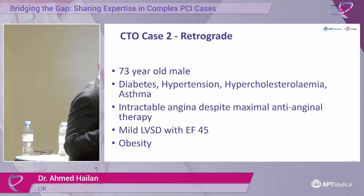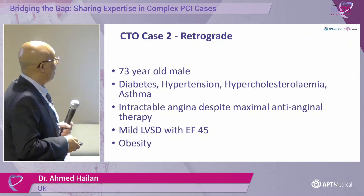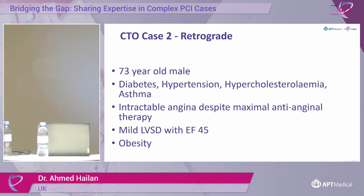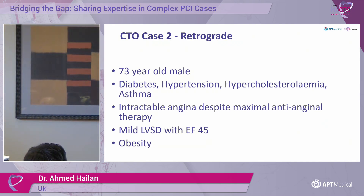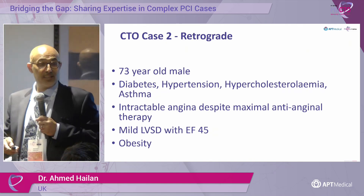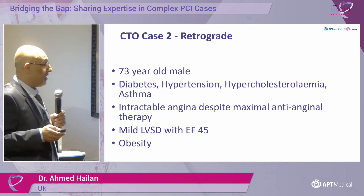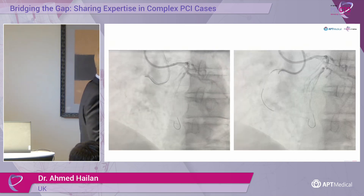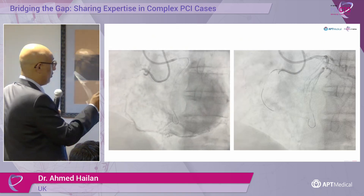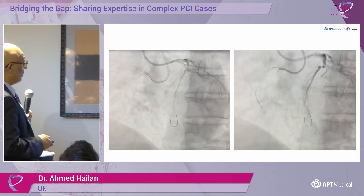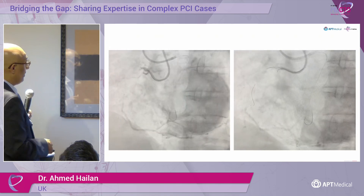The next case is a 73-year-old gentleman, diabetic, hypertensive, hypercholesterolemic, with a history of asthma, presenting with intractable angina despite maximum anti-anginal therapy. This last point is really important - since the ISCHEMIA trial, you need to document the patient is already on more than one anti-anginal to justify your procedure. Mild LV systolic dysfunction with ejection fraction 45% and obesity. The angiogram shows a proximal RCA occlusion with the LAD and LCx unobstructed, and lots of collaterals into the right coronary artery.